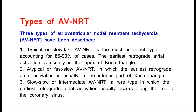The earliest retrograde atrial activation in typical AVNRT is usually in the apex of Koch triangle. The second type is atypical or fast-slow AVNRT, in which the earliest retrograde atrial activation is usually in the inferior part of Koch triangle. The third is slow-slow or intermediate AVNRT, a rare type in which the earliest retrograde atrial activation usually occurs along the roof of the coronary sinus.